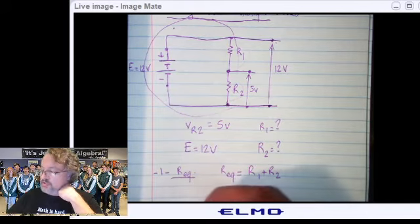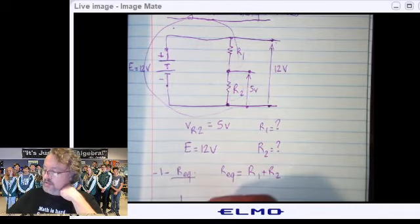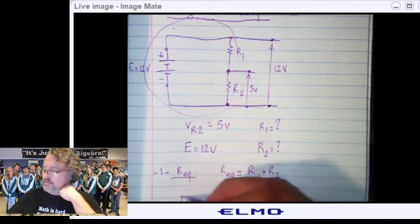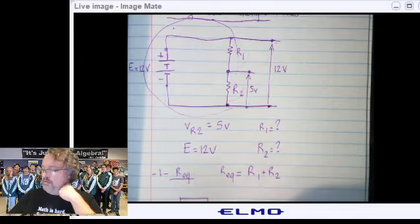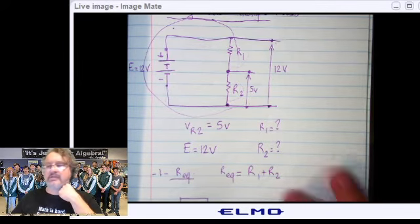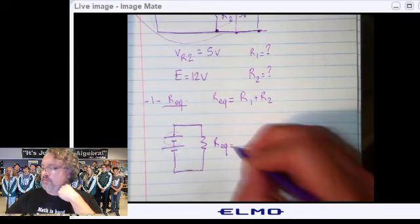So, if I redraw the circuit, I am going to have my battery with my one cell and my second cell right here. And it's going to be with this equivalent resistance right here. That's equal to R1 plus R2.